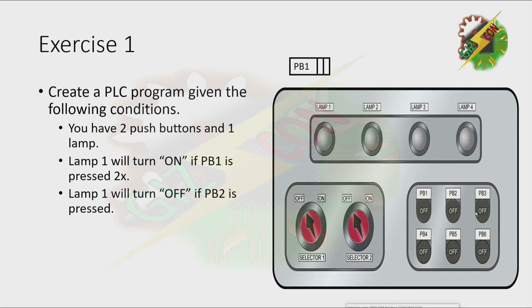You have two push buttons and one lamp. Lamp 1 will turn on if PB1 is pressed two times. Lamp 1 will turn off if PB2 is pressed. Let's have our demonstration. Let's press PB1, and let's press PB1 again, and lamp 1 will turn on. Now let's press PB2 — lamp 1 will turn off.